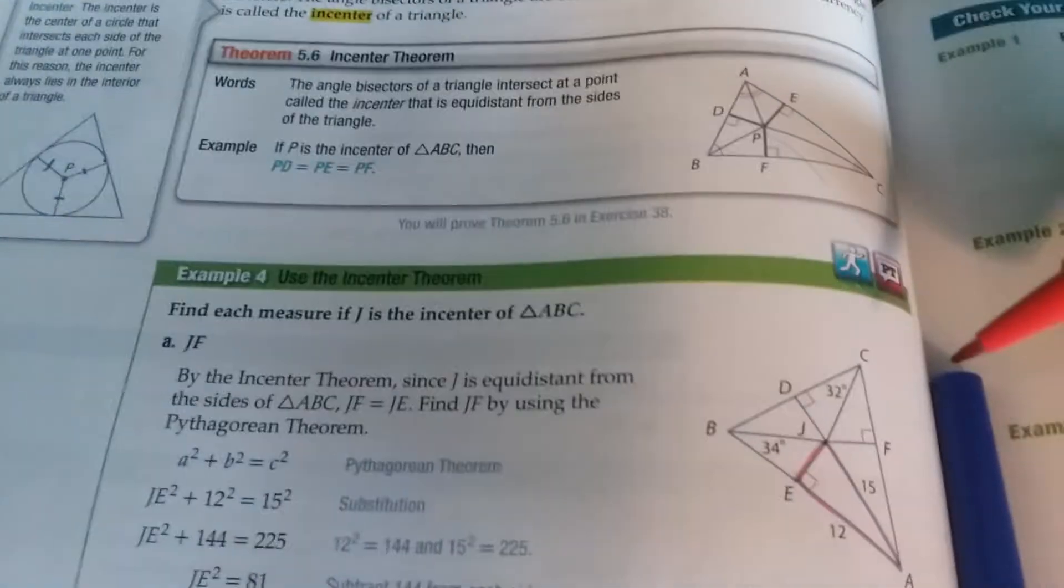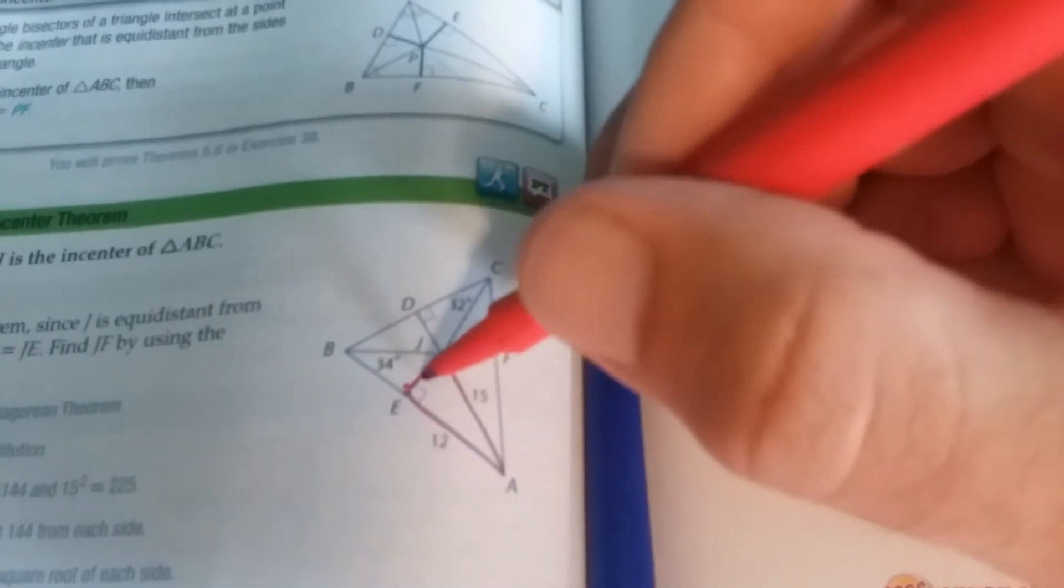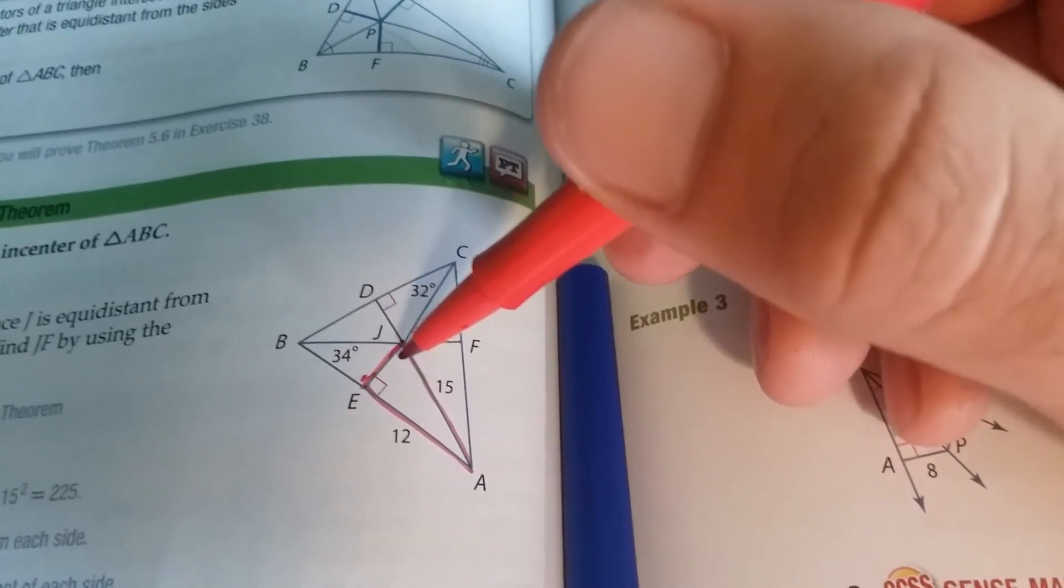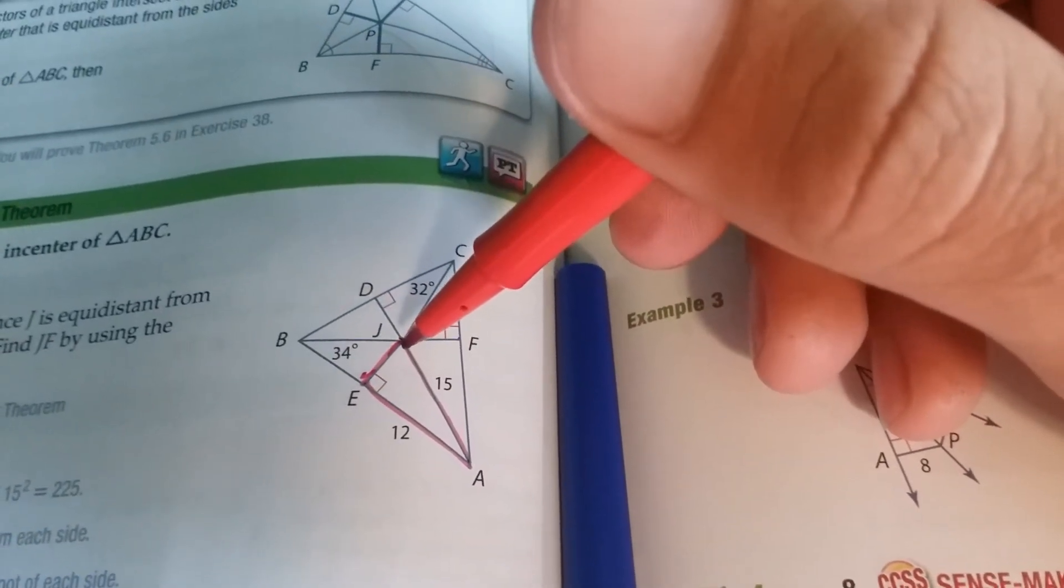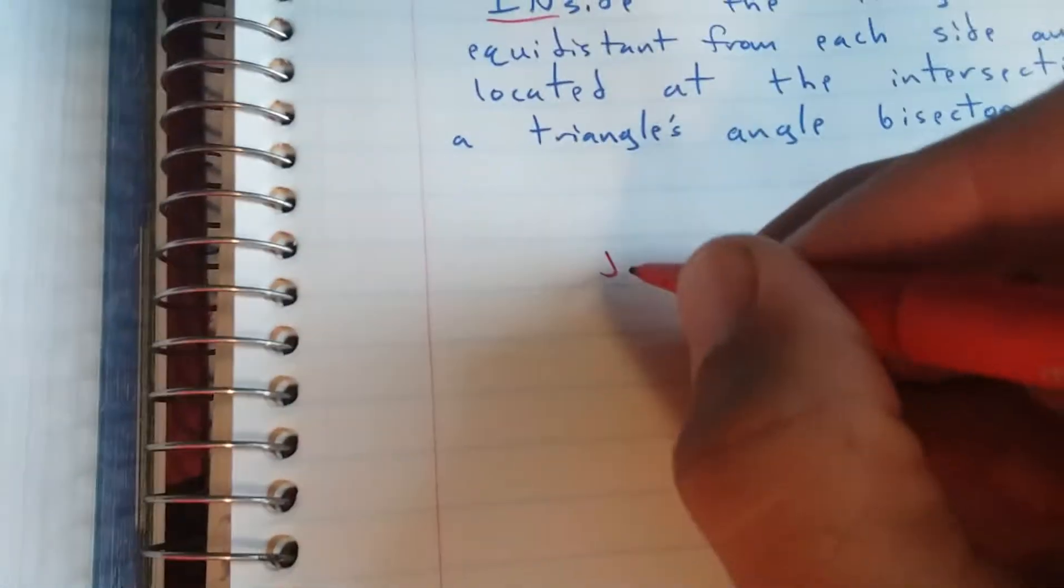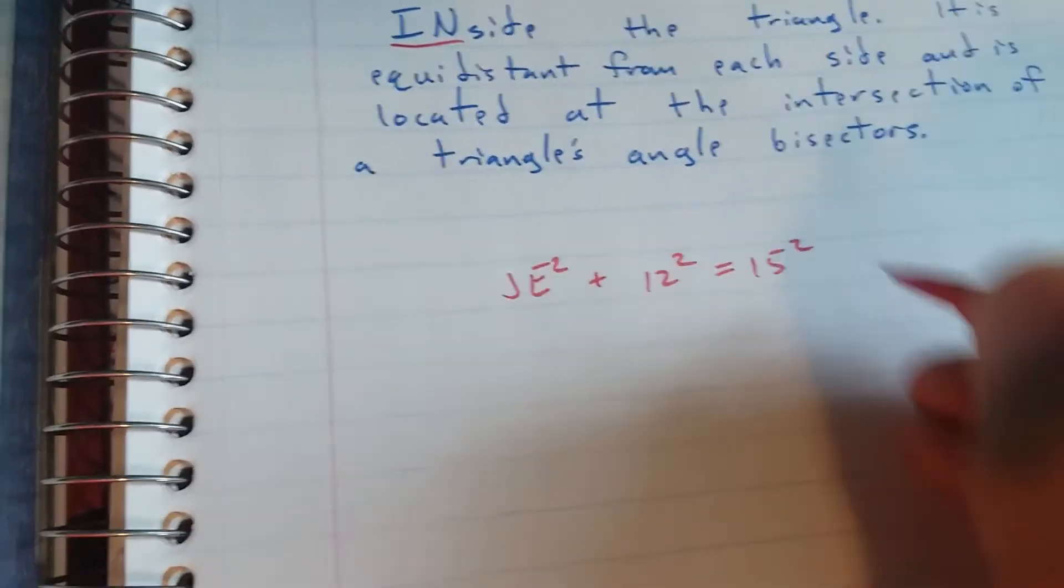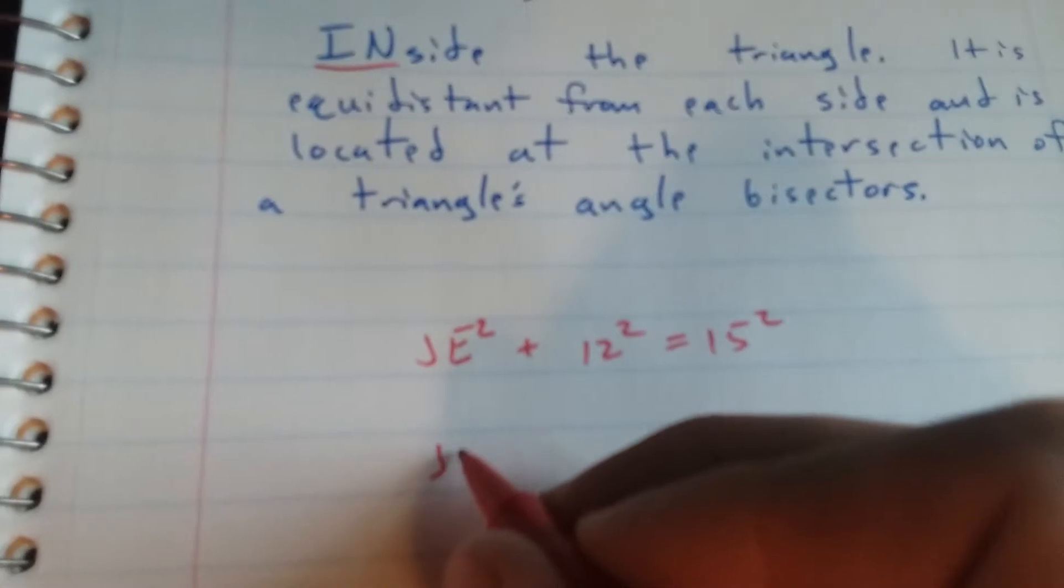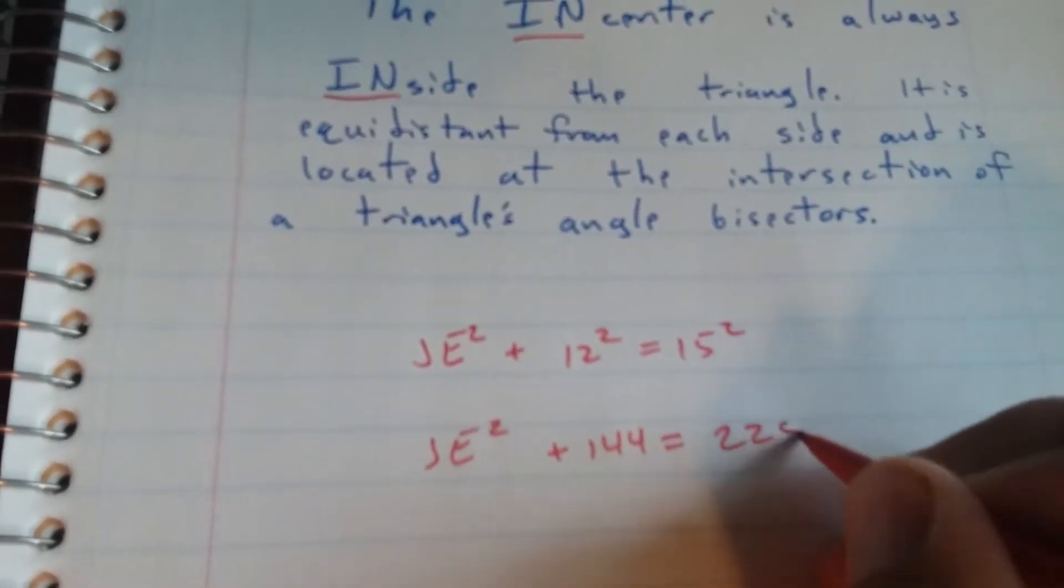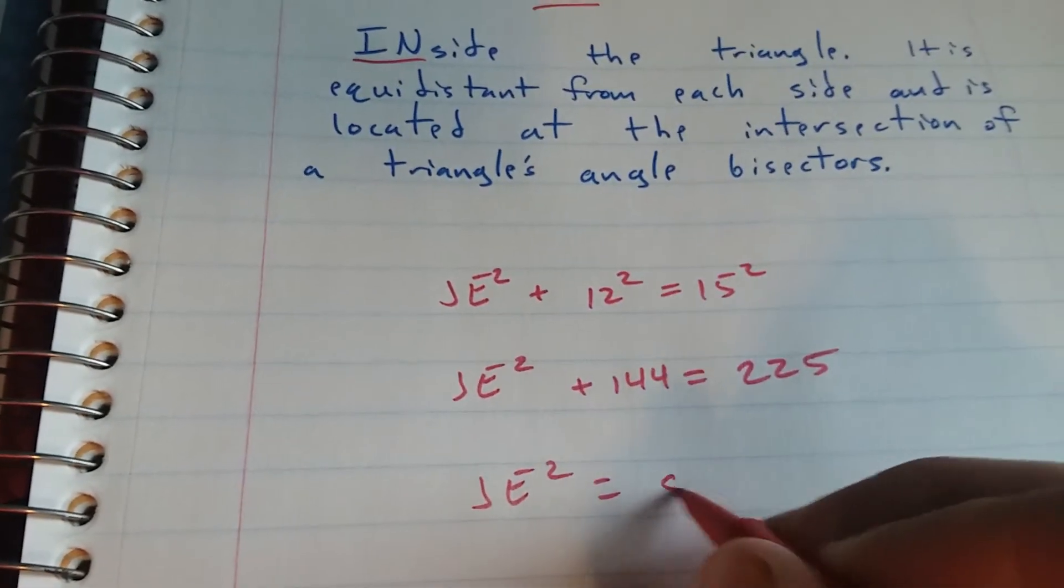So if we're trying to find JF, this length is the same as this length. Now we can find JE because it is the side of a right triangle. JE squared plus 12 squared equals 15 squared. So that means that JE squared plus 144 equals 225. Subtract 144 from both sides. JE squared equals 81.